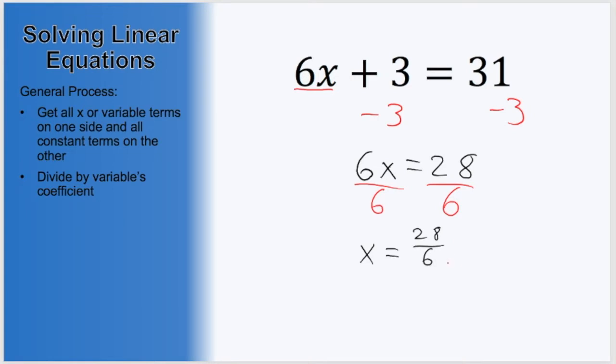While 6 does not fit evenly into 28, we can still simplify this fraction. Both the top and bottom are even, so we can divide them both by 2. This will give us, on the top, 28 over 2 is 14. On the bottom, 6 divided by 2 is 3. There's nothing else we can do to simplify this, so we have solved for x and gotten its value to be 14 thirds. We got x equals a number, so we have solved this equation.